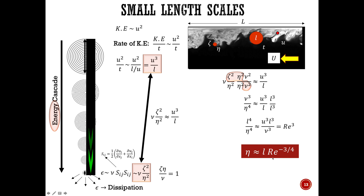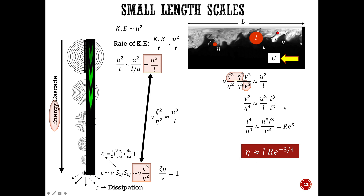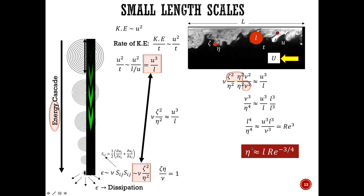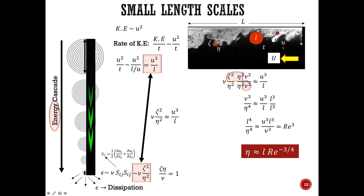What this means is that as the Reynolds number increases, the smallest length scale eta goes down. We'll look at some examples of this in class, but this is all you need to solve the last problem in the first homework. Have fun!